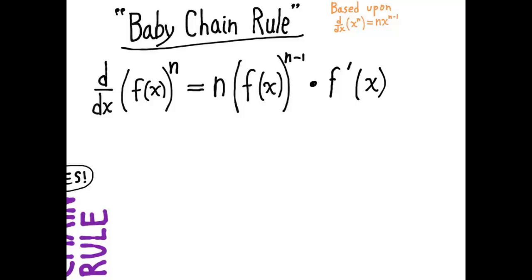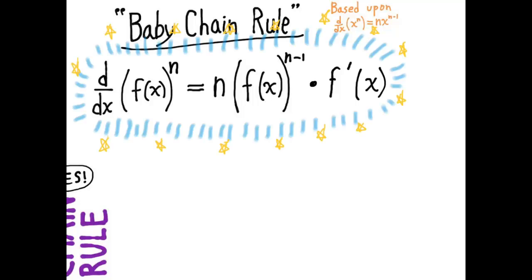So this is the baby chain rule and I want to show you a few concrete examples. First of all, let's look at the derivative of x squared to the fifth. You don't need the baby chain rule to find this derivative because you know it's really the same as x to the tenth and the derivative will be 10x to the ninth.